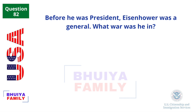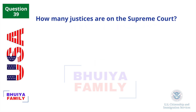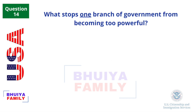Before he was President, Eisenhower was a General. What war was he in? World War II. How many justices are on the Supreme Court? 9. What stops one branch of government from becoming too powerful? Checks and Balances.